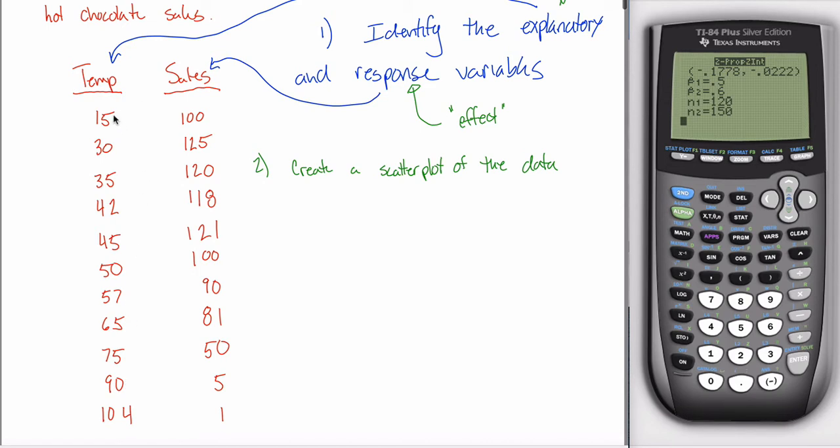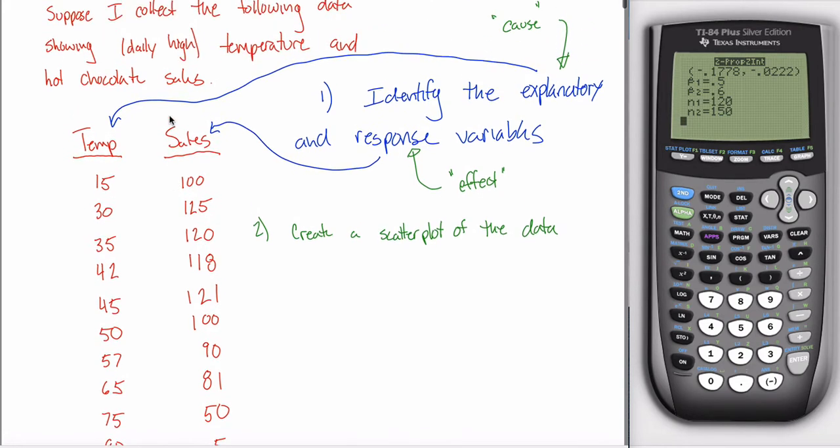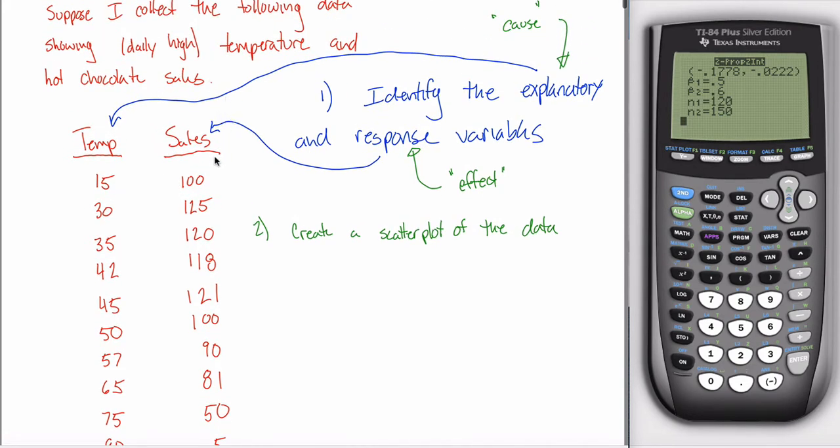And on each day, I record the daily high temperature and how many hot chocolate sales some kid has at a hot chocolate stand. And I want to study the correlation between these two variables. It might help to think about temperature as causing hot chocolate sales, higher temperature causing sales to decrease. But what you'll see is we don't really get causation, we only get correlation between the two variables.